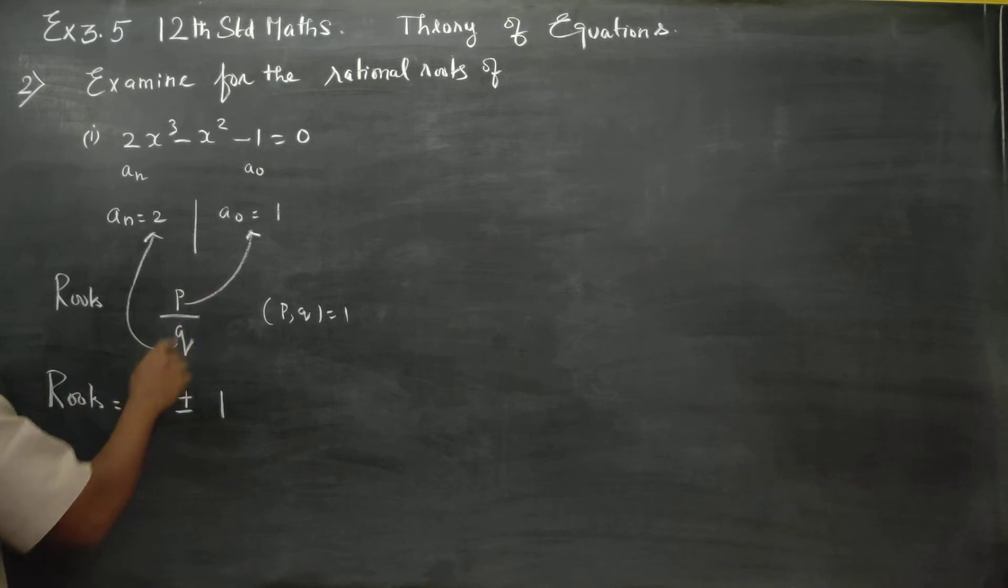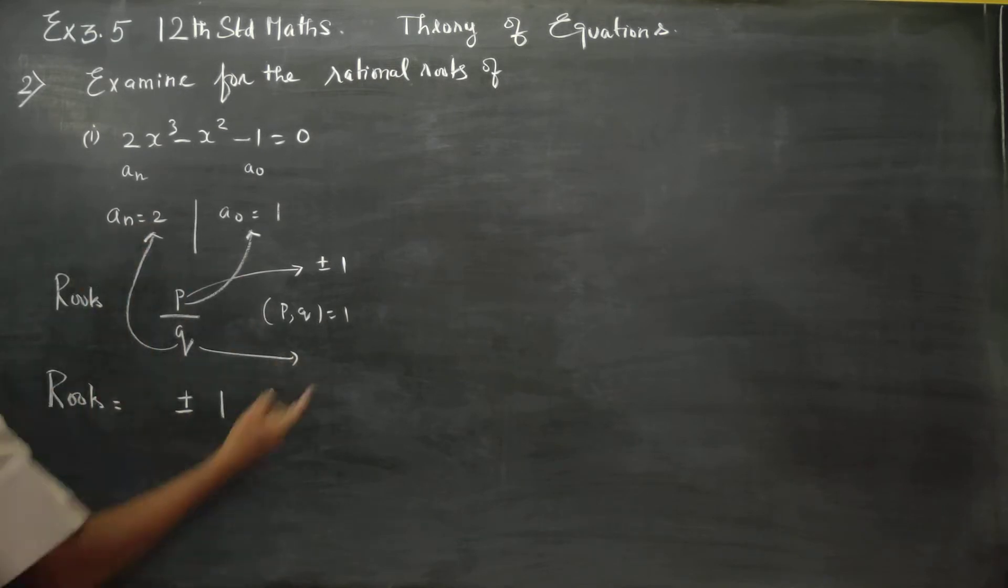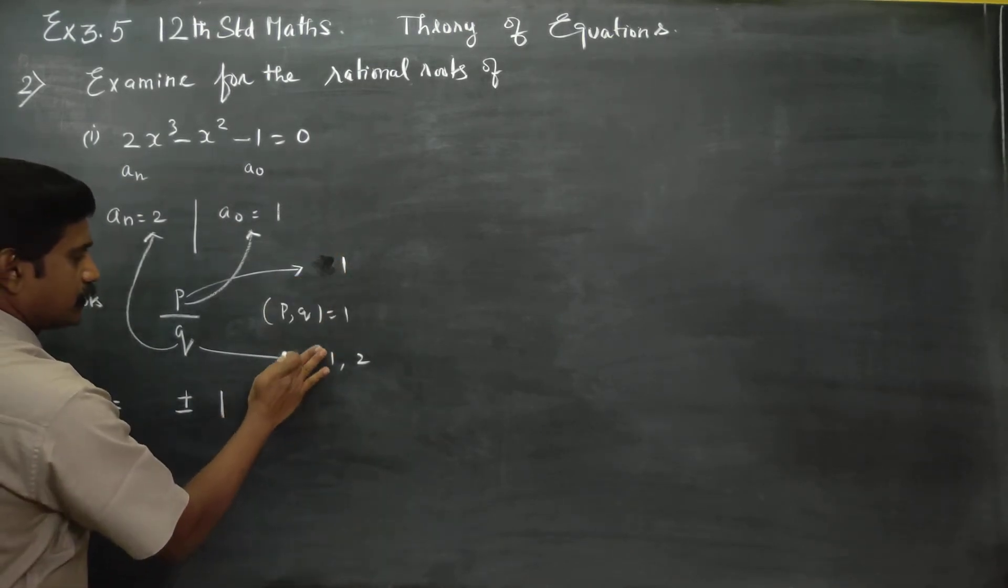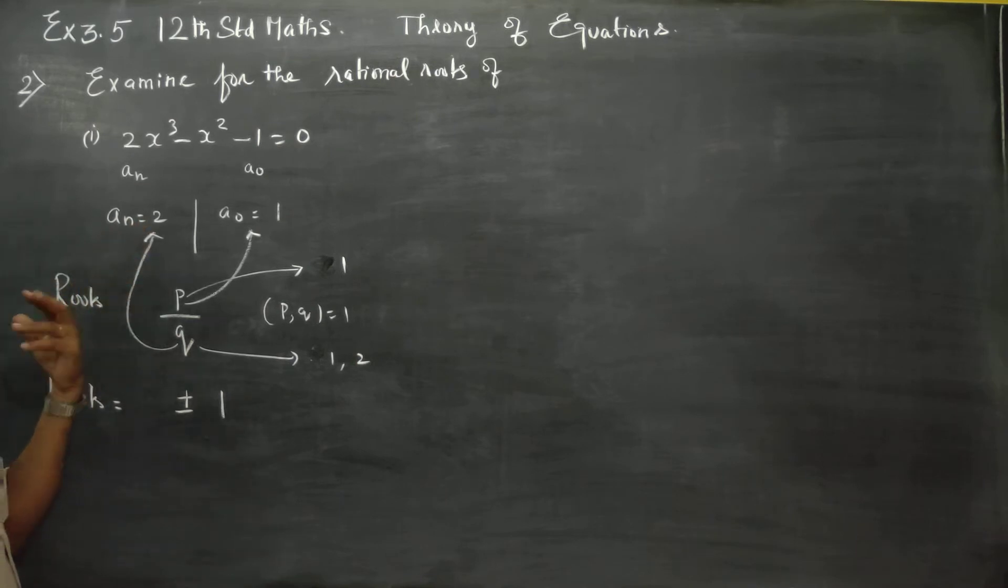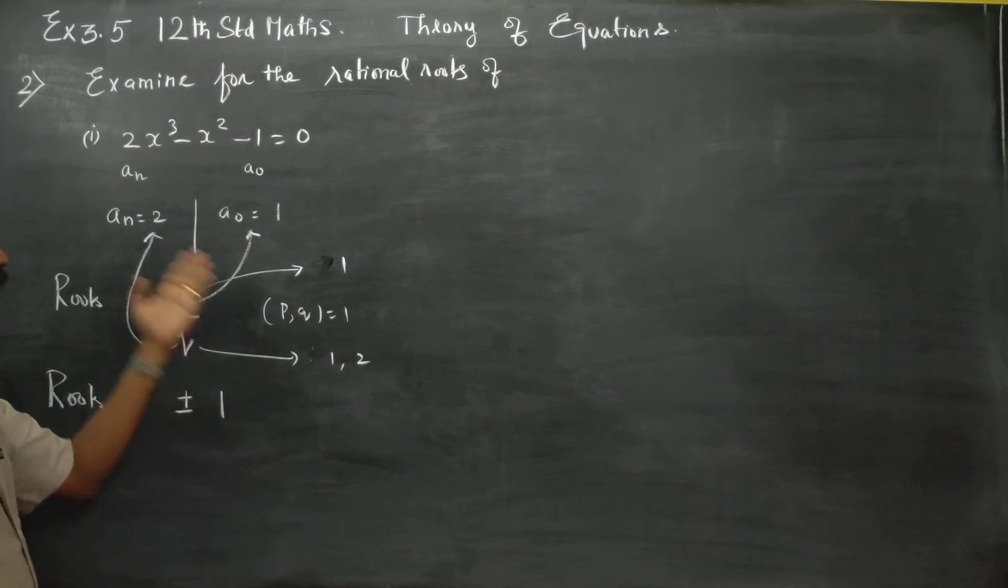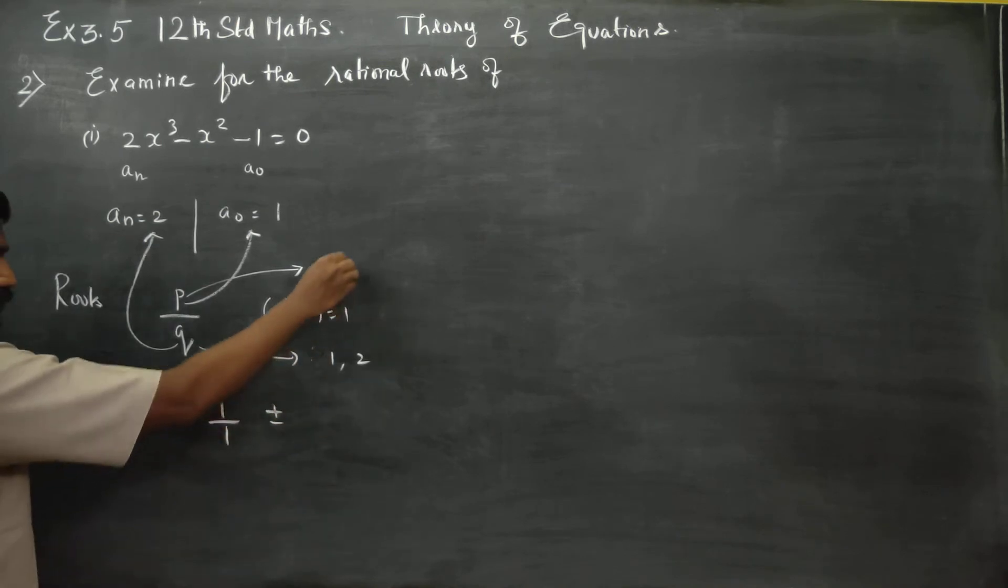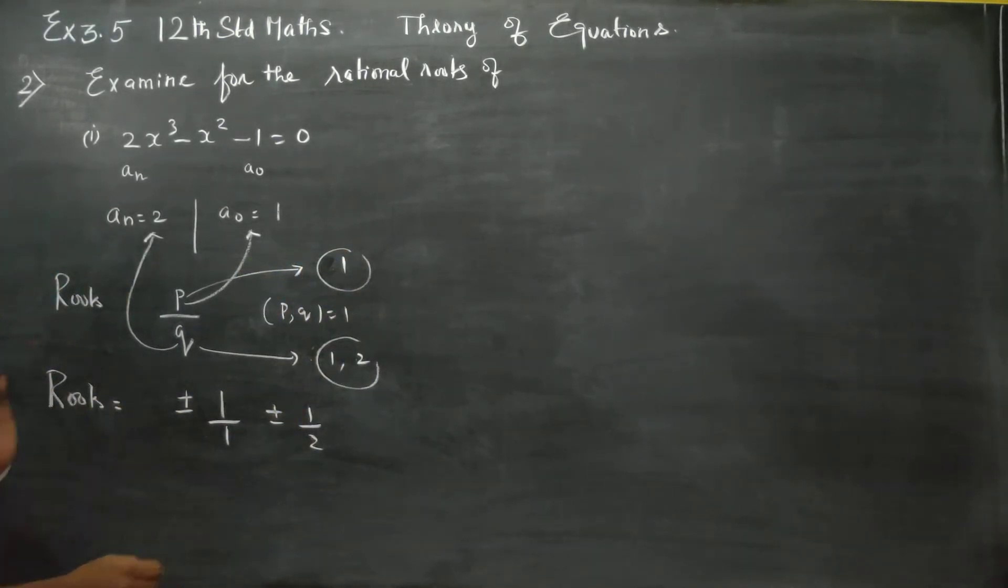This is root. Q is 2. Factors of 2 are 1 and 2. So Q could be 1 or 2. P by Q gives plus or minus 1, plus or minus 1 by 2. This is the first set of chances.